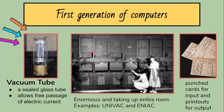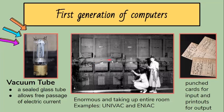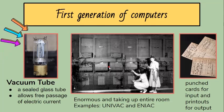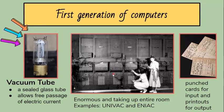The first computers used vacuum tubes for circuitry and magnetic drums for memory, often enormous and taking up entire rooms. They relied on machine language. Some examples are UNIVAC and ENIAC.